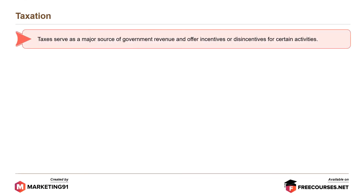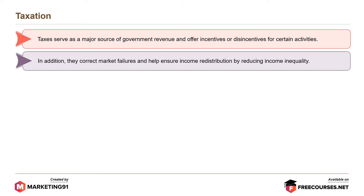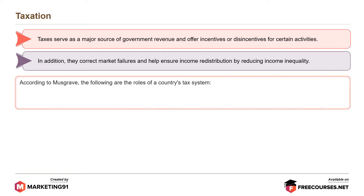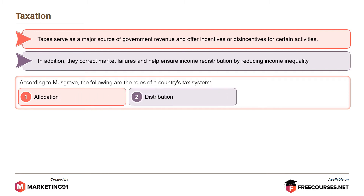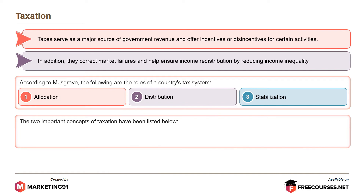Next is taxation. Taxes serve as a major source of government revenue and offer incentives or disincentives for certain activities. In addition, they correct market failure and help ensure income redistribution by reducing income inequality. According to Musgrave, the roles of a country's tax system are: allocation, distribution, and stabilization.